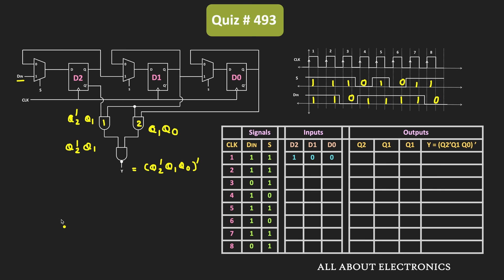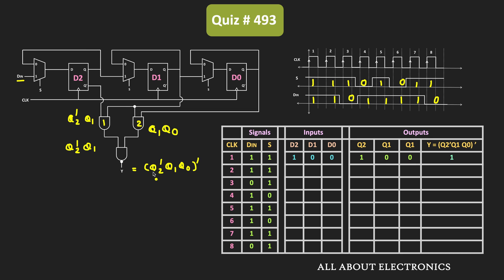During the first clock pulse, based on these inputs, the output of the flip-flop will change. For the D flip-flop, the output is same as the input. That means just after the first clock pulse, the outputs Q2, Q1 and Q0 are also equal to 1, 0, 0. The output Y is the complement of Q2·Q1·Q0. Since Q2 is equal to 1, Q2·Q1 will be 0, and if we take the complement of it, this Y output will be equal to 1. That means during the first clock pulse, Y output is equal to 1.